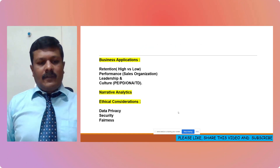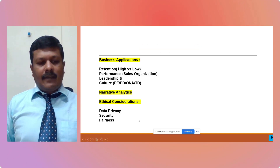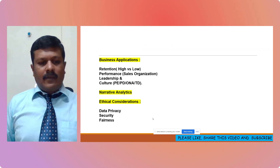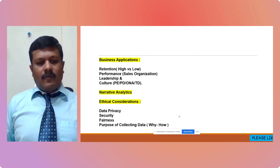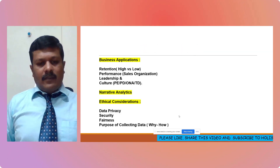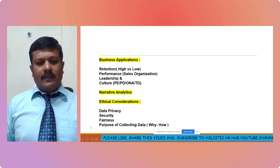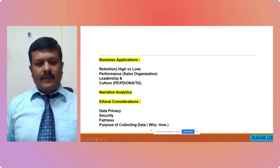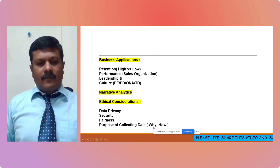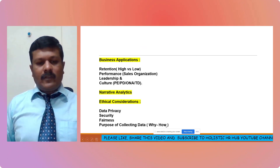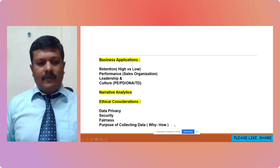Fairness — especially with respect to compensation and benefits, we will have to see the fairness of the data we have, which part of the organization is getting undue increments or undue promotions. These things we can analyze with the help of HR analytics. The fourth consideration is what is the purpose of collecting the data — why we are collecting it and how we are going to use it. As HR folks, the why part and how we are going to use that data are absolutely crucial.